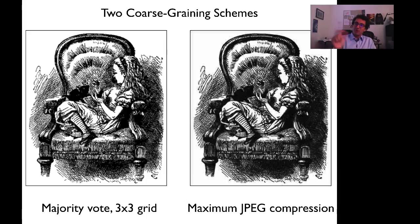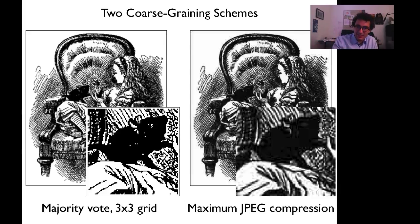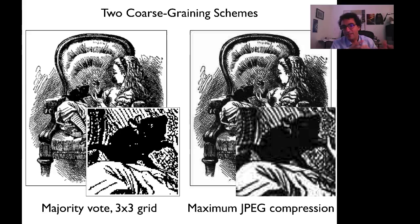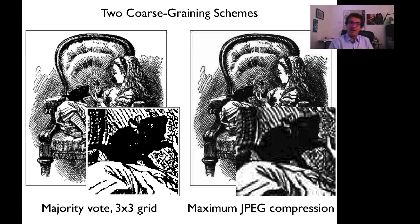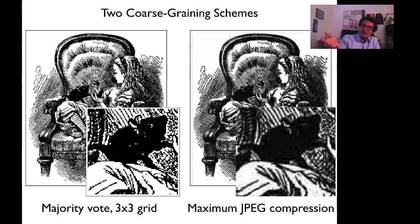Both images look reasonably good, but they have different properties. Let's zoom in on Dinah. On the left-hand side you can see the majority-vote coarse-graining. One of the features of majority-vote coarse-graining is that each pixel is still either black or white. If I zoom in again — and Dinah's looking much more like a rat now than a cat — you can see the JPEG image on the right-hand side has made different choices about what to keep and what to throw away.